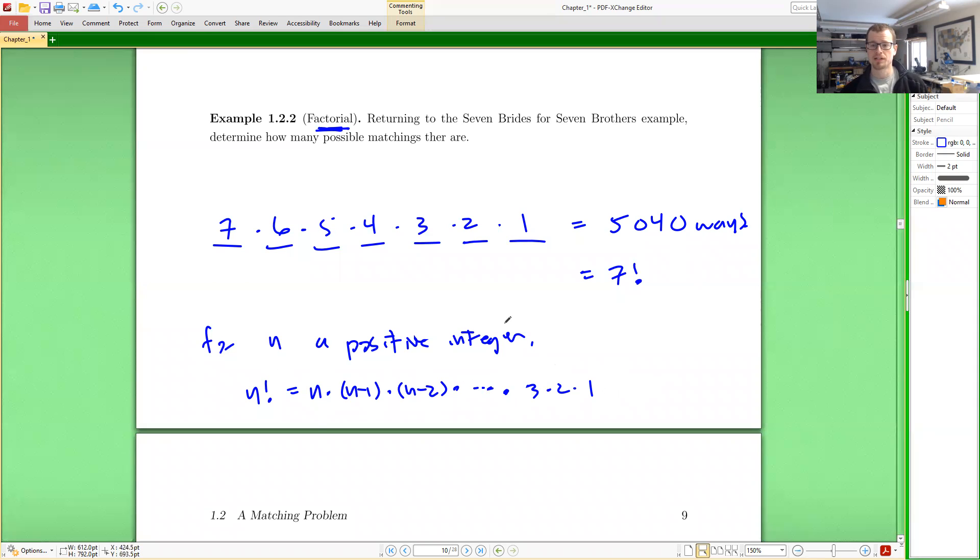There's one additional factorial that we define. We've required a positive integer. So that's one, two, three, four, and so on. But we also define zero factorial to be one. Why? Because we define it to be. It is very convenient. So that's what we want. So we have this factorial notation.